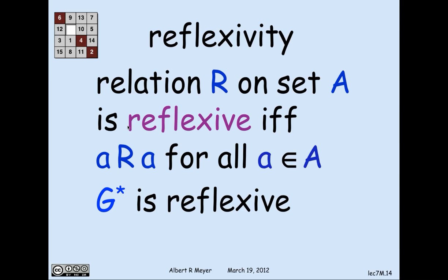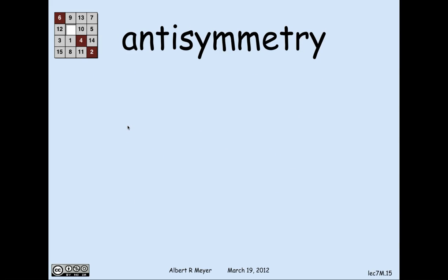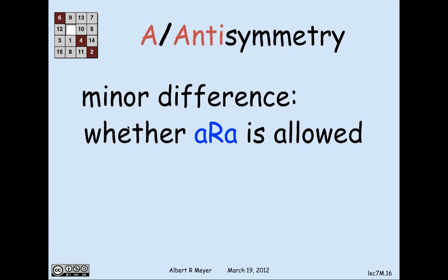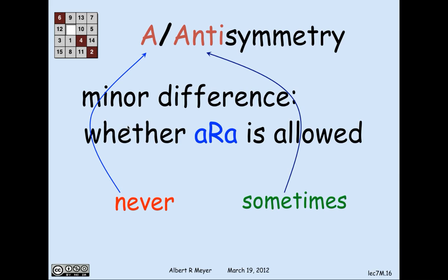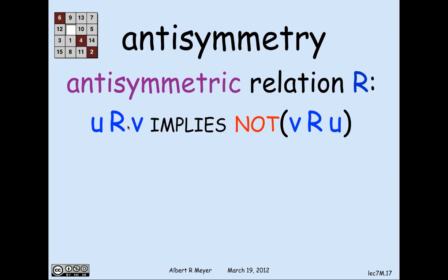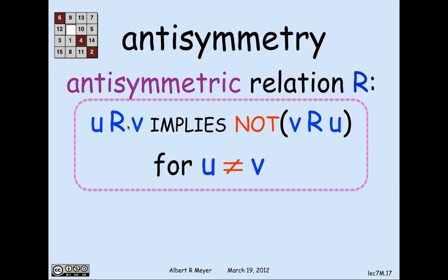Playing with axioms, we can reformulate asymmetry. The idea of asymmetry except for elements being related to themselves is called antisymmetry. A relation r is antisymmetric if and only if it is asymmetric except for the a r a case. More precisely: in asymmetry, a r a is never allowed; in antisymmetry, a r a is possible. Formally, an antisymmetric relation satisfies: u r v implies not v r u, for u ≠ v. Antisymmetry is the same as asymmetry except for the a r a case.